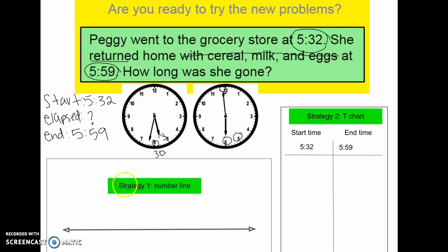So we're going to look at two different strategies for figuring out how much time has passed or elapsed. The first strategy is a number line. So we're familiar with number lines. We've seen them for fractions and for number talks. So let's take a look at our start time, 5:32, and I'm going to put it down here at the beginning of my number line. And my end time is 5:59. So that's going to go at the end of our number line. We're trying to get from 5:32 to 5:59.